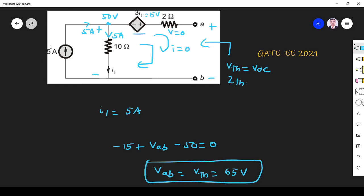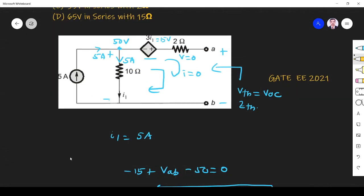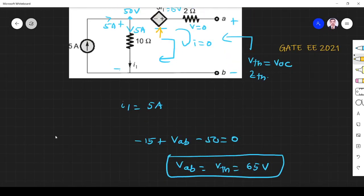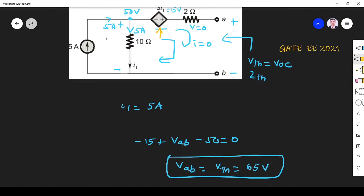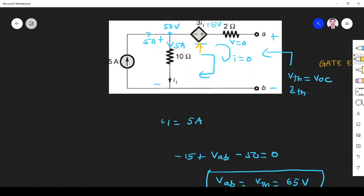So we found Vth. Next, we have to find Zthevenin. How are we going to find Zthevenin? Since our circuit has a dependent source, we cannot find Zthevenin directly. What we have to do first is remove the independent source. Here we have a current source that we have to remove. If you remove the current source from the network it will become open.